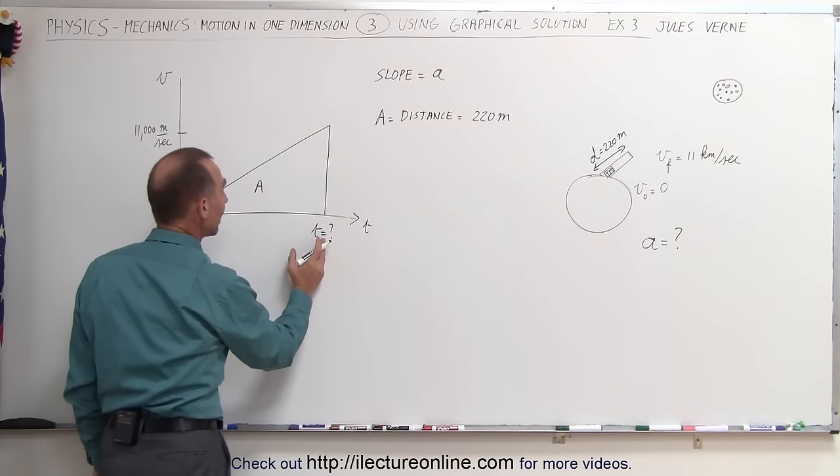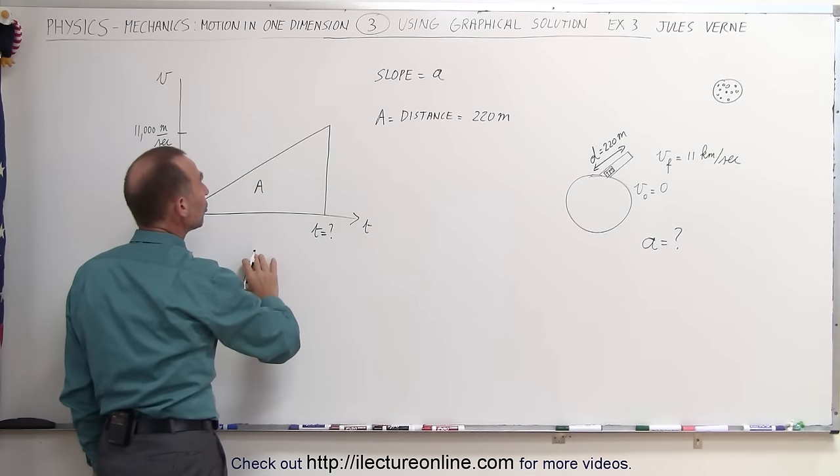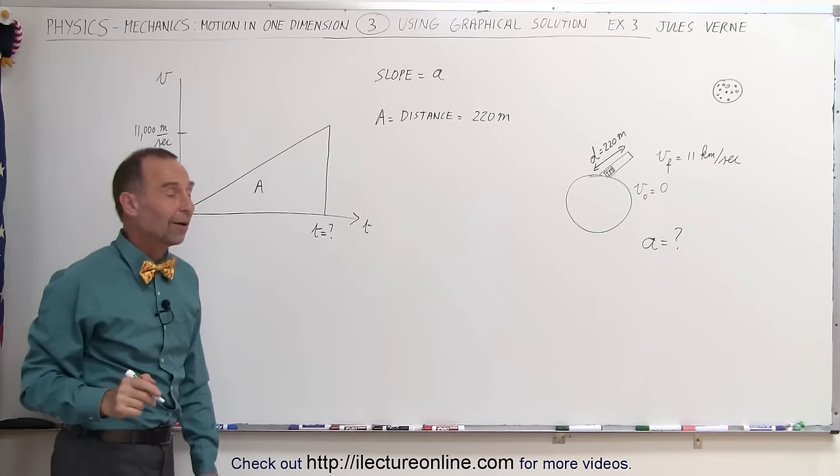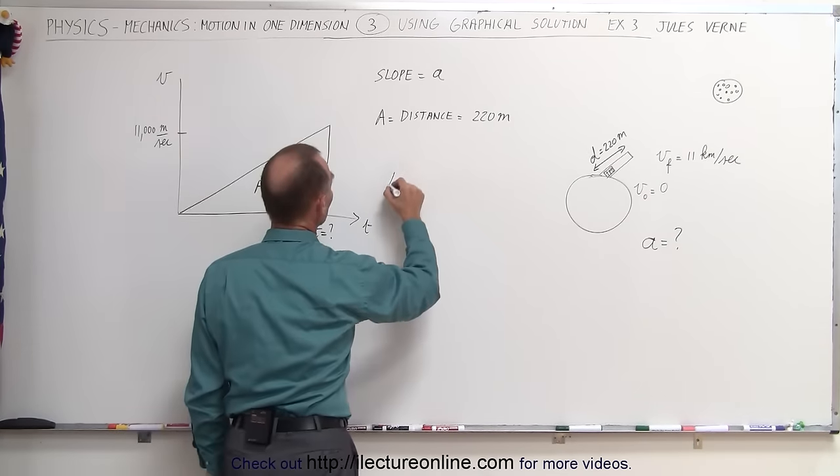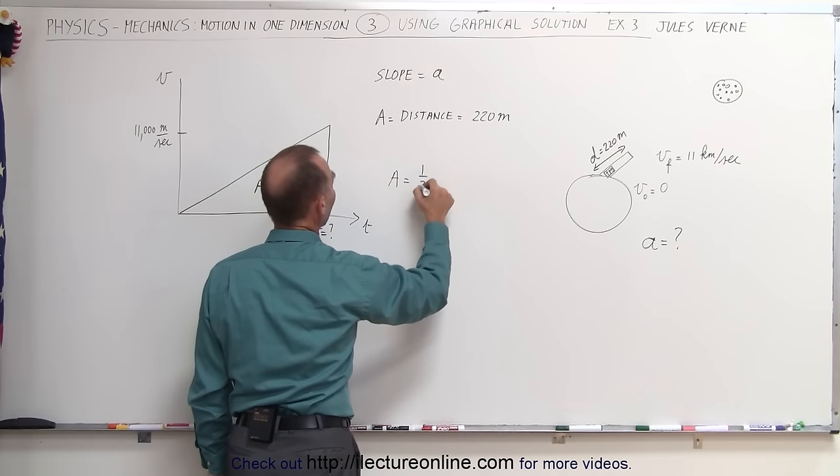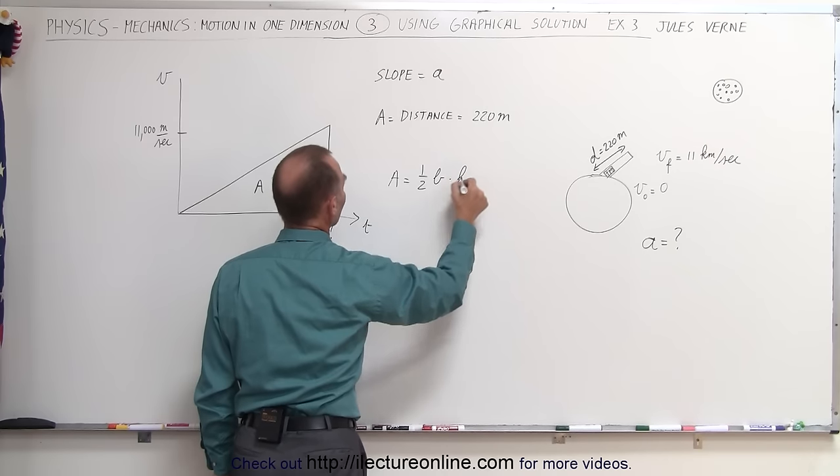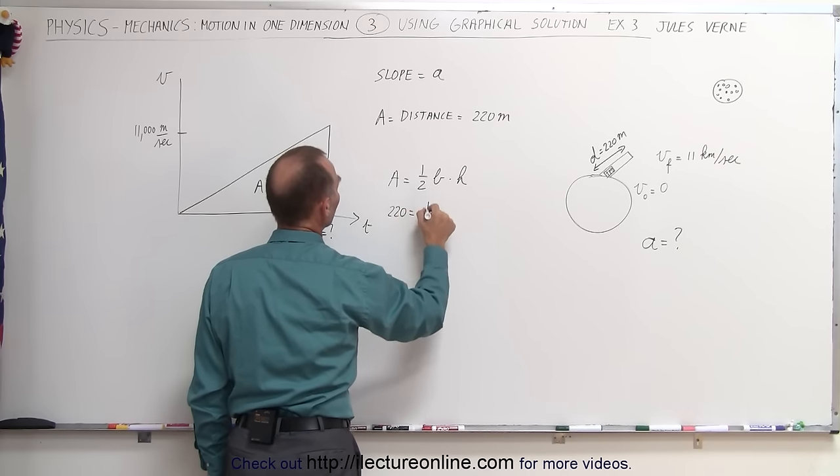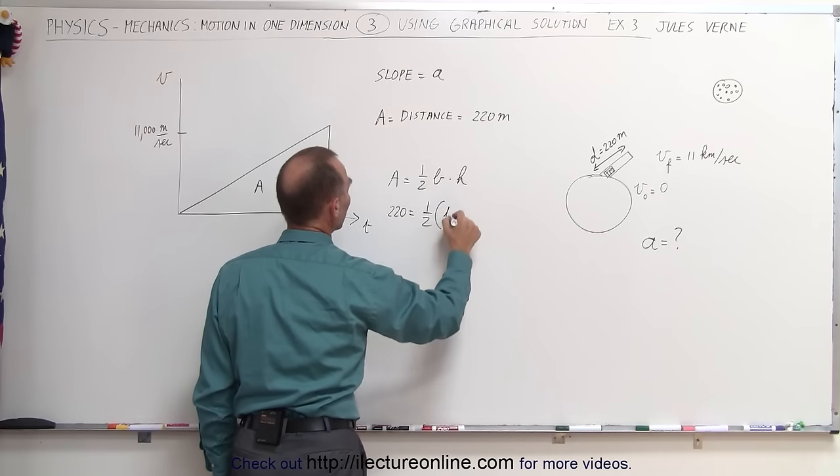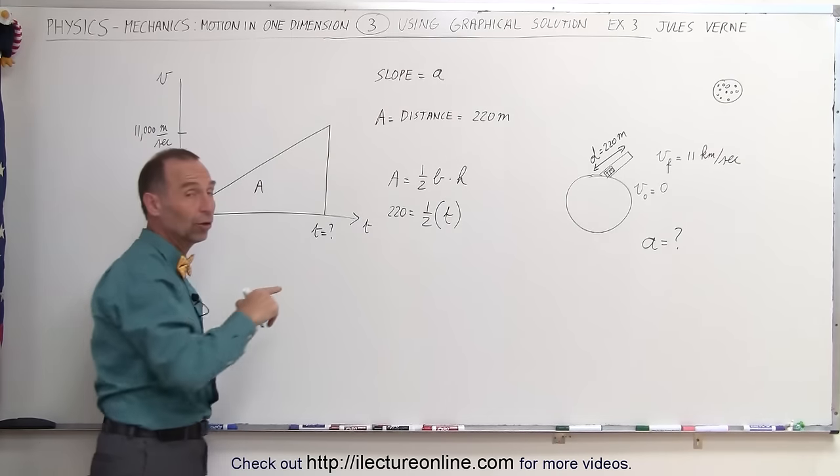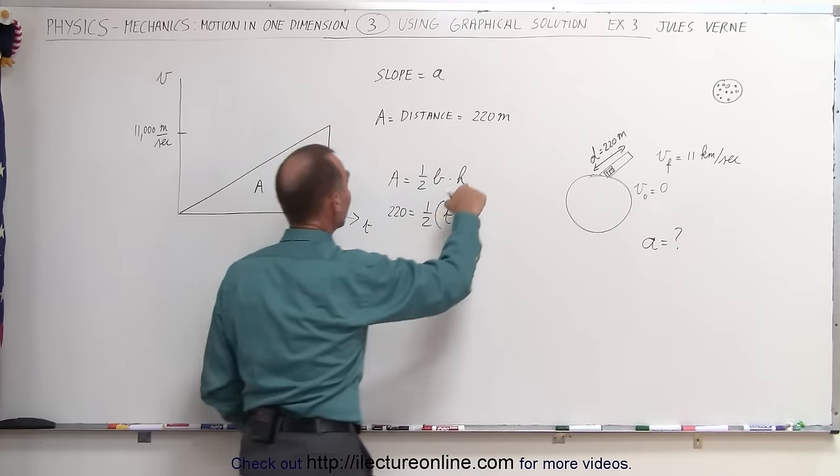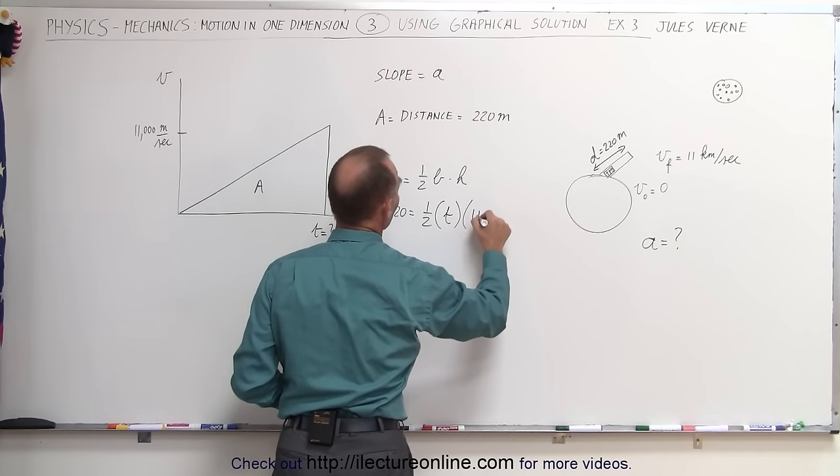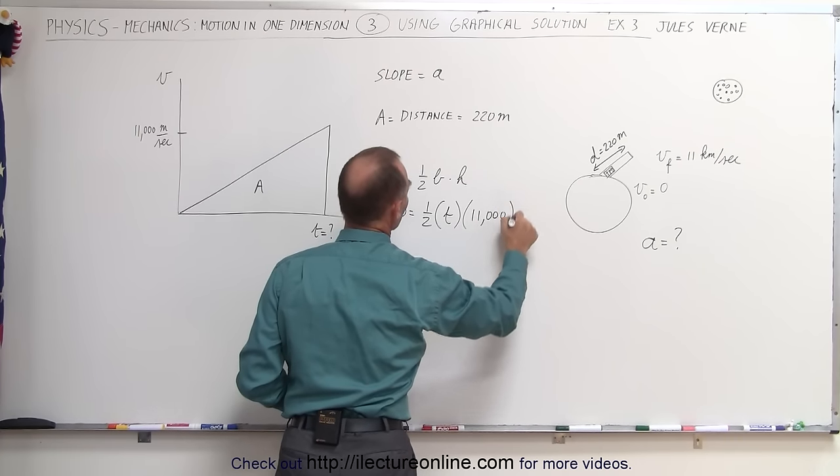First we'll find the time using the area, then we'll find the acceleration using the slope. The area of this triangle is one-half the base times the height. The area of 220 meters equals one-half times the base (the time lapse) times the height (11,000 meters per second).